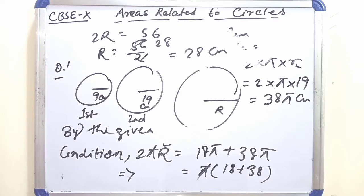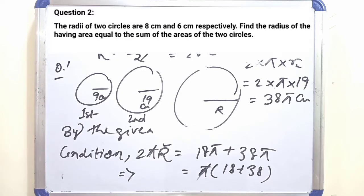Now next, question number 2: The radii of 2 circles are 8 cm and 6 cm respectively. Find the radius of the circle having area equal to the sum of the areas of the two circles.